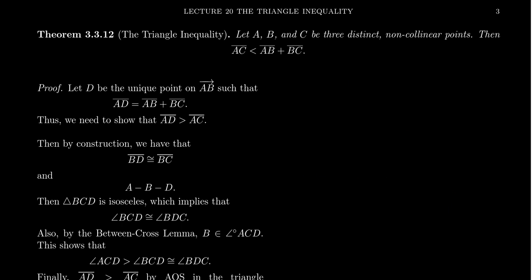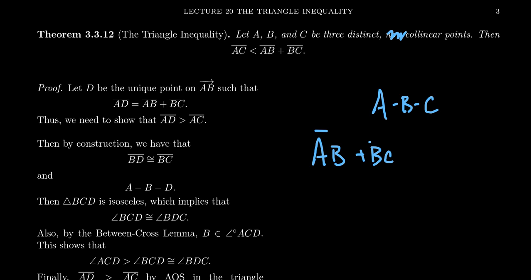In this statement I'm assuming the three points are non-collinear. Some people rephrase the triangle inequality to allow for collinearity. If A, B, and C were collinear, by trichotomy there must be a betweenness relation; without loss of generality assume B is between A and C. Then by the segment addition axiom, AB plus BC equals AC — we have equality in that situation.